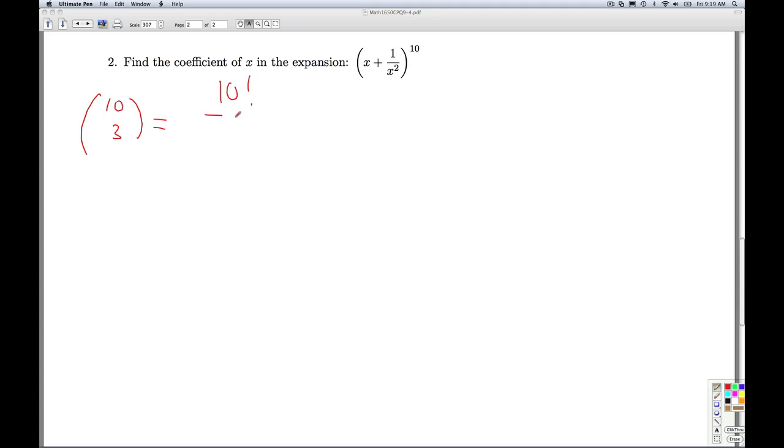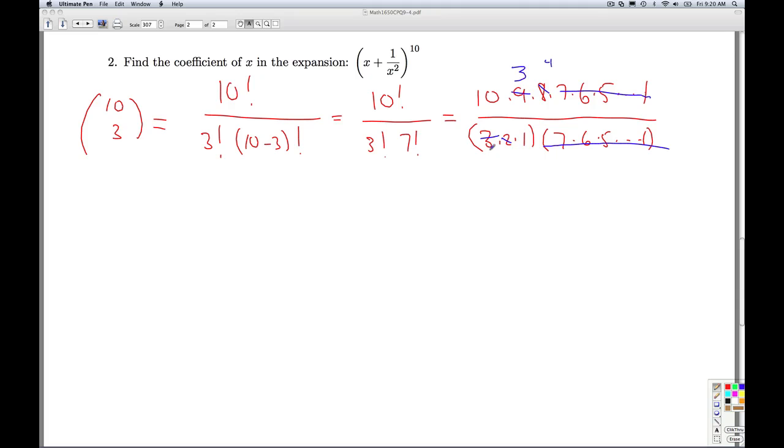that's 10 factorial over 3 factorial times 10 minus 3 factorial. So it's 10 factorial over 3 factorial times 7 factorial, which is 10 times 9 times 8 times 7 times 6 times 5, all the way down to 1, over 3 factorial is 3 times 2 times 1. And 7 factorial is 7 times 6 times 5, all the way down to 1. So remember, in evaluating these binomial coefficients, when in doubt, write it out, because you see we've got a lot of cancellation here. I can cancel the 2 into the 8 and get a 4. I can cancel the 3 into the 9 and get a 3. So when it's all said and done, I get 10 times 3 times 4, which is 120.